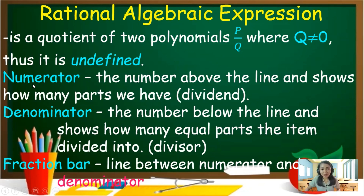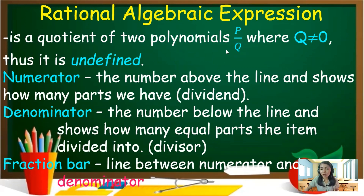The numerator is the number above the line and shows how many parts we have. The denominator is the number below the line and shows how many equal parts the item is divided into. So the lower part is called the denominator. Numerator is the dividend, denominator is the divisor. The fraction bar is the line between numerator and denominator — it symbolizes division as an operation.